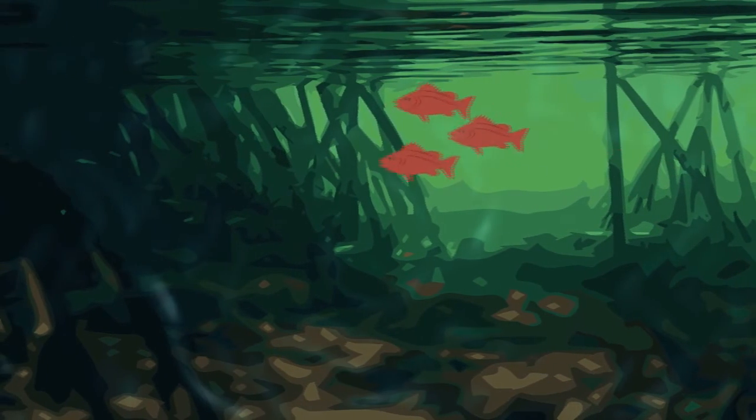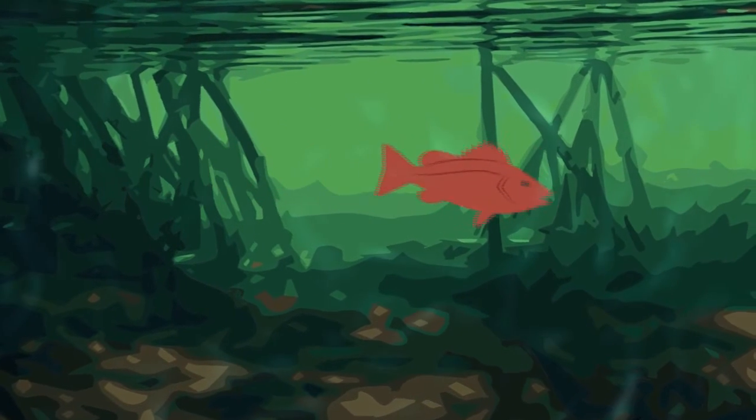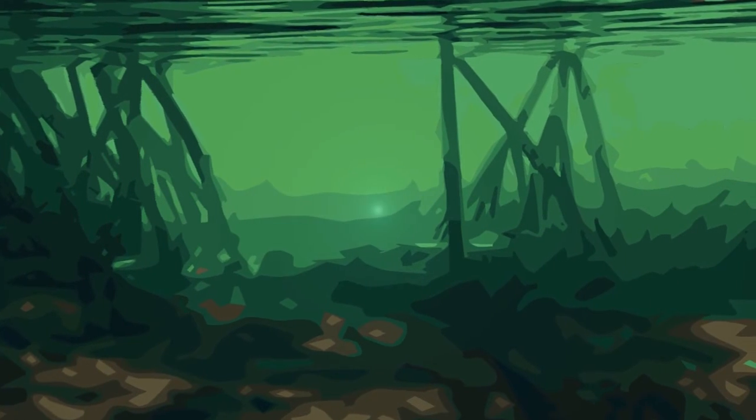If we disrupt the processes between the different areas where animals breed, feed, and grow, these species will suffer. They may lose genetic diversity or become locally extinct.